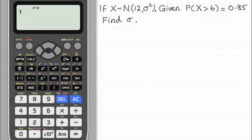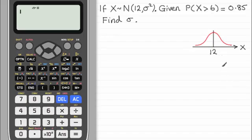So the first thing I'll do is sketch a normal distribution graph for the random variable x so we've got the mean of 12 there. And underneath I'll draw the standardised normal distribution graph z. So it has a mean of 0 and remember since the variance is 1 the standard deviation sigma would be 1.